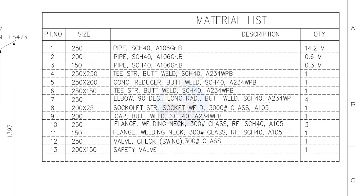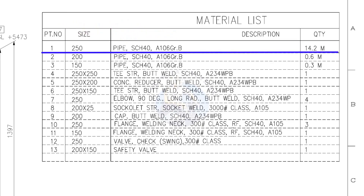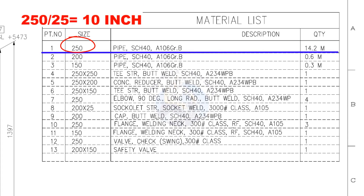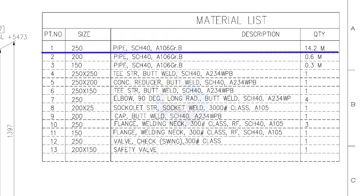Let us start with the material list. Part number 1: pipe nominal size is 250. If you want to convert this into inches, divide it by 25 and you will get the nominal pipe size in inches. What is the nominal pipe size of this 250 NB pipe in inches? Divide 250 by 25 — the answer is 10 inches. What is the inch size of the 200 NB pipe? Divide 200 by 25 — the answer is 8 inches.